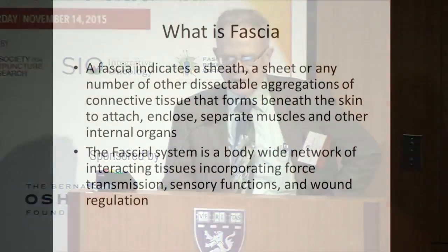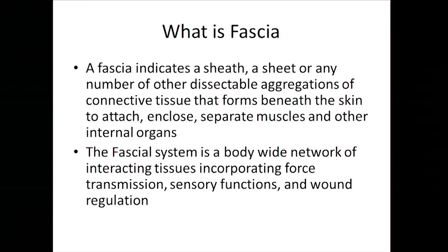What is fascia? Fascia is a sheath or a sheet — a number of dissectable aggregations of connective tissue that forms somewhere beneath the skin. It attaches, encloses, and separates muscles and other internal organs. It's one of the largest organs in the body. The fascial system is a body-wide network of interacting tissues incorporating force transmission, sensory functions, wound regulation, and a number of other things we are going to discover over the next years.